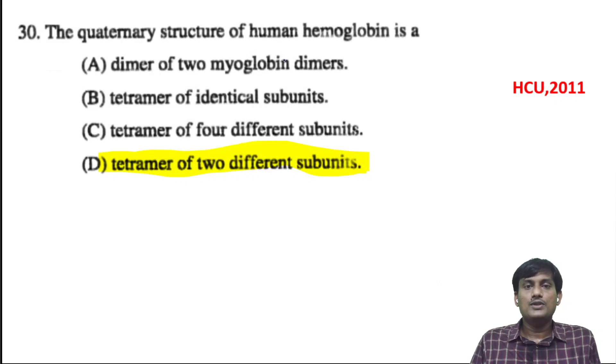The quaternary structure of human hemoglobin: Human hemoglobin has 4 units, α2 and β2, which is represented as α2β2. It has 2 different units and each one contains 2 subunits. So it's a tetramer of 2 different subunits. This is the correct option.